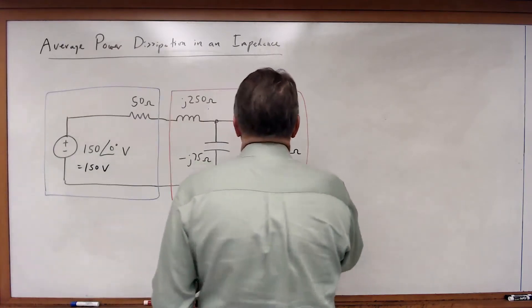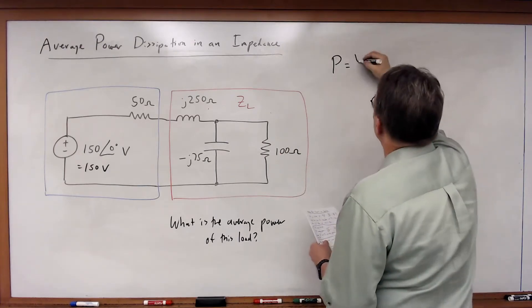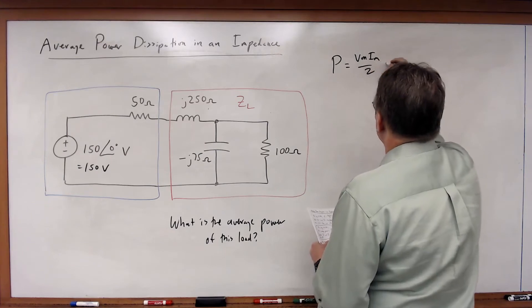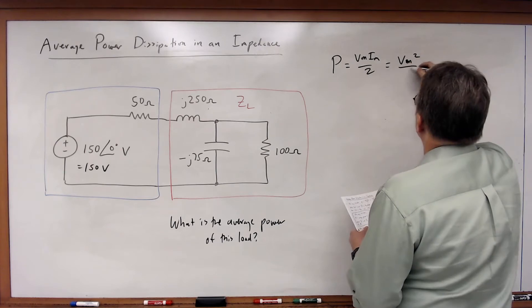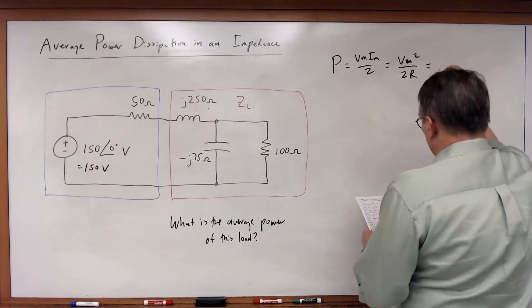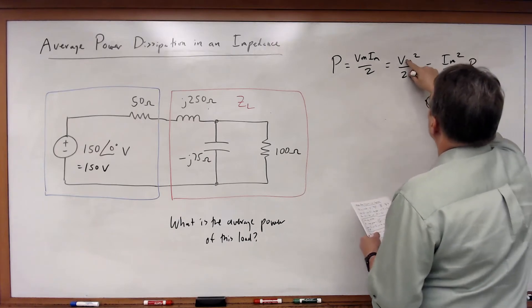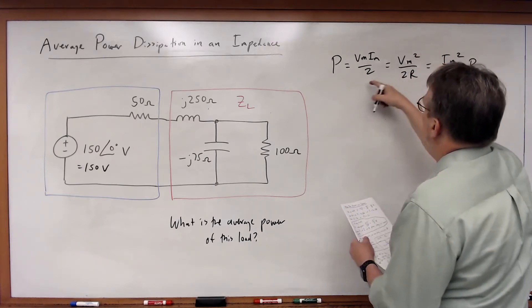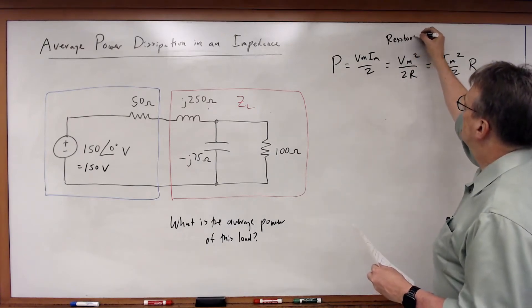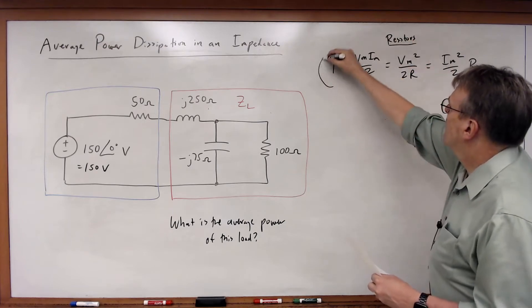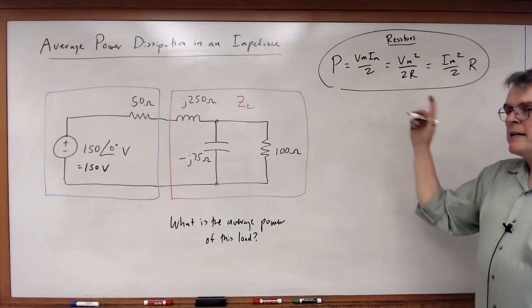We remember that for a resistor, P is equal to Vm Im over 2, or equal to Vm squared over 2R, or equal to Im squared over 2 times R. And so we have all these alternate definitions that come out of us applying this strictly to resistors. We looked at those definitions before, but let's consider what this means.